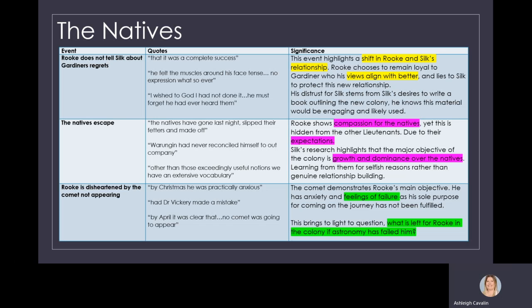All the while, Rook has been looking for this comet. The comet never arrives. Remembering, Rook is here to be an astronomer. The comet demonstrates Rook's main objective. He has anxiety and feelings of failure as his sole purpose for coming on the journey has not been fulfilled. If he can't be an astronomer in the new world, if the comet never comes, which it hasn't, it brings to light the question: What is left for Rook in the colony if astronomy has failed him?